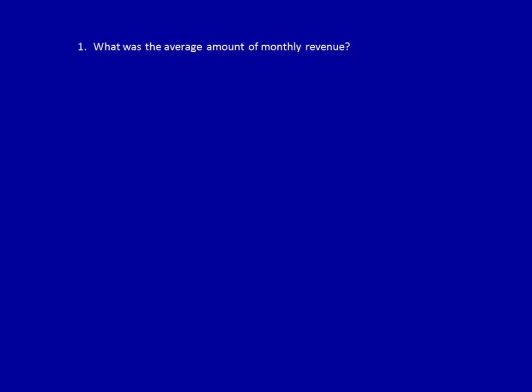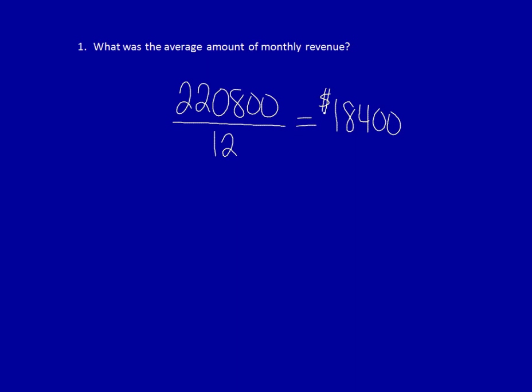What was the average amount of monthly revenue? We calculate this by dividing total revenues by the number of months the statement covers, which in this case was 12. Average monthly revenues are $18,400. Does that mean the company actually earned $18,400 in revenue every single month? The answer is no — many companies are seasonal, with high revenues in certain months and low revenues in others. For instance, toy stores generally do 50% of their sales during the Christmas season, and for the remainder of the year their sales vary greatly.